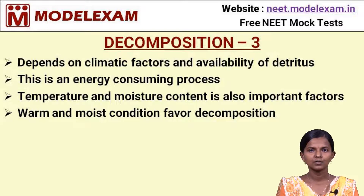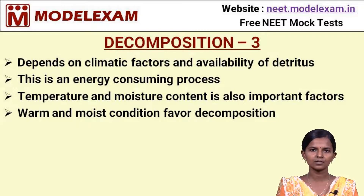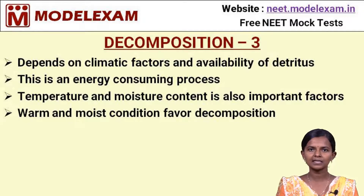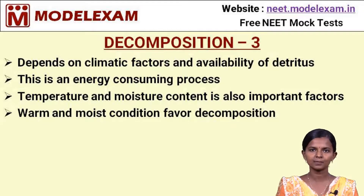What are the factors involved in the process of decomposition? Decomposition depends on climatic factors. As seen previously, rainfall is the main source for the decomposition of litter, so climatic factors play an important role. The next factor is the availability of detritus, which is the organic matter available for the production of inorganic substances.